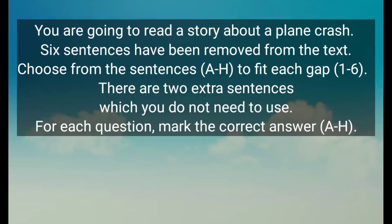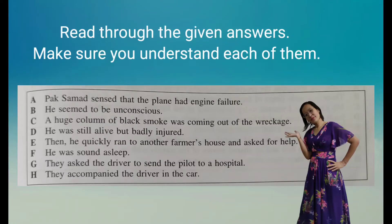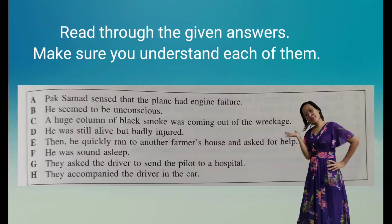Do not be worried if there are any words that you do not understand. Now let's look at the given answers — there are eight answers but you only need six of them. A: Pak Saman sensed that the plane had engine failure. 'Sensed' means he felt that. B: He seemed to be unconscious. 'Unconscious' means he is not aware of it. C: A huge column of black smoke was coming out from the wreckage. D: He was still alive but badly injured. Then he quickly ran to another farmer's house and asked for help. F: He was sound asleep — 'sound asleep' means he is sleeping deeply. G: They asked the driver to send the pilot to a hospital. And H: They accompanied the driver in a car. So in total, there are eight sentences given to you and you only need to choose six sentences.